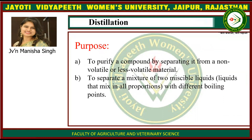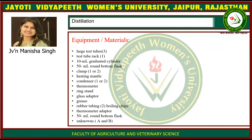What is the purpose of distillation? The first purpose is to purify a compound by separating it from a non-volatile or less volatile material. The second is to separate a mixture of two miscible liquids — liquids that mix in all proportions — with different boiling points. Now, the equipment and materials required.